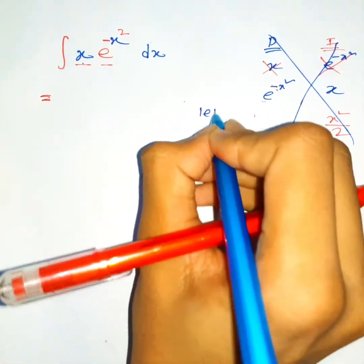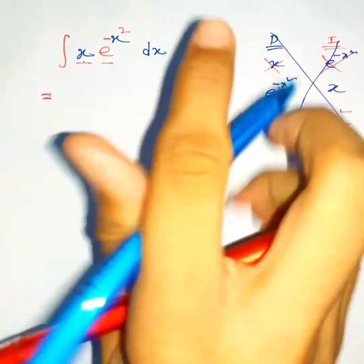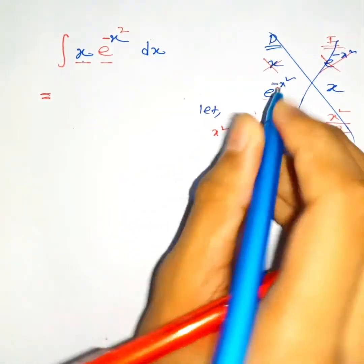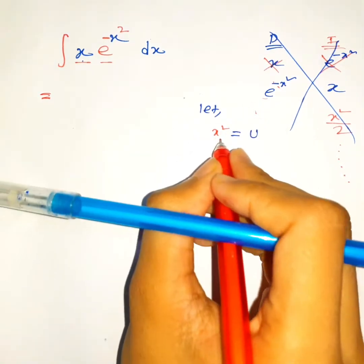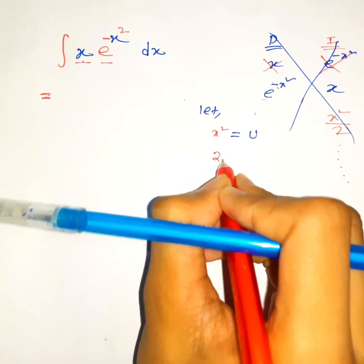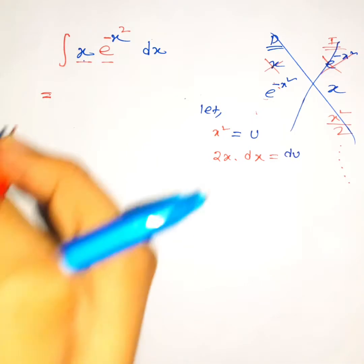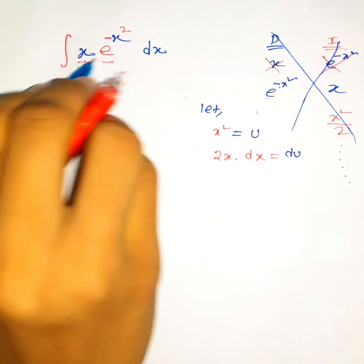So let's substitute x squared with u. Let's say x squared equals u. Now if you differentiate both sides with respect to x, so 2x dx equals du.